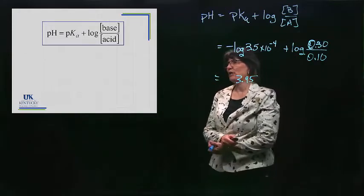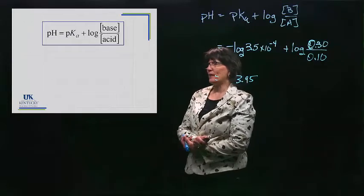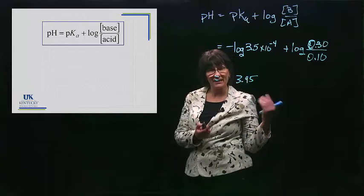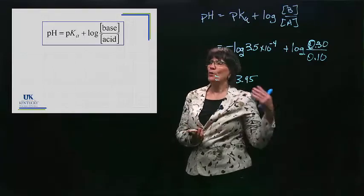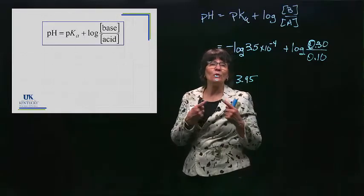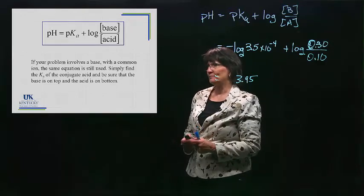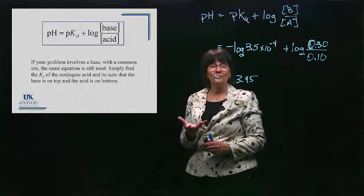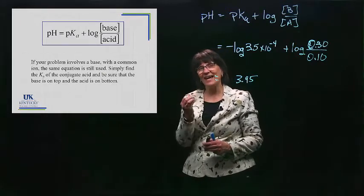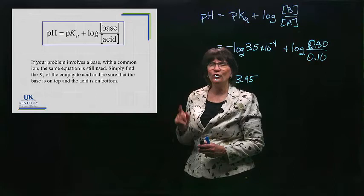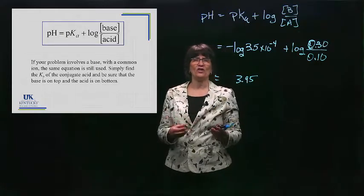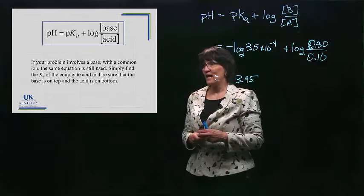Now, when we look at this equation here, the next thing we need to note about it is what if it's a buffer that's not made up of a weak acid in its conjugate base, but it's a weak base with its conjugate acid. Remember, either one of those is the recipe for a buffer. Well, what we have to make sure we do if it's a base buffer is we figure out the Ka of its conjugate acid and use the equation just as you see it. Don't try to make any other modifications. Find the Ka that you need.